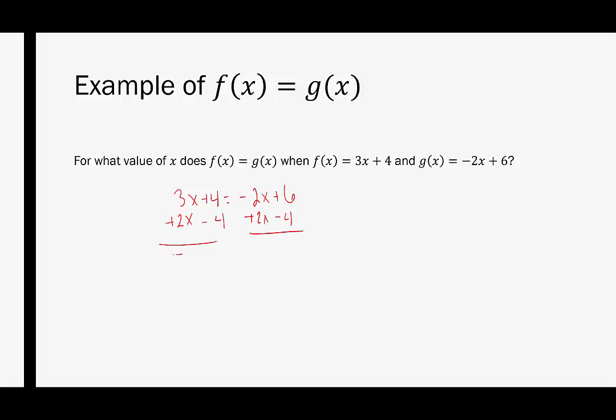This way I have 3x plus 2x is 5x, plus 4 and minus 4 is 0, so we have 5x equals, this is 0, 6 plus negative 4 is 2. Now we can divide both sides by 5, and we figure out that x is equal to 2 fifths. So for what value does f of x equal g of x? That would be when x is equal to 2 fifths.